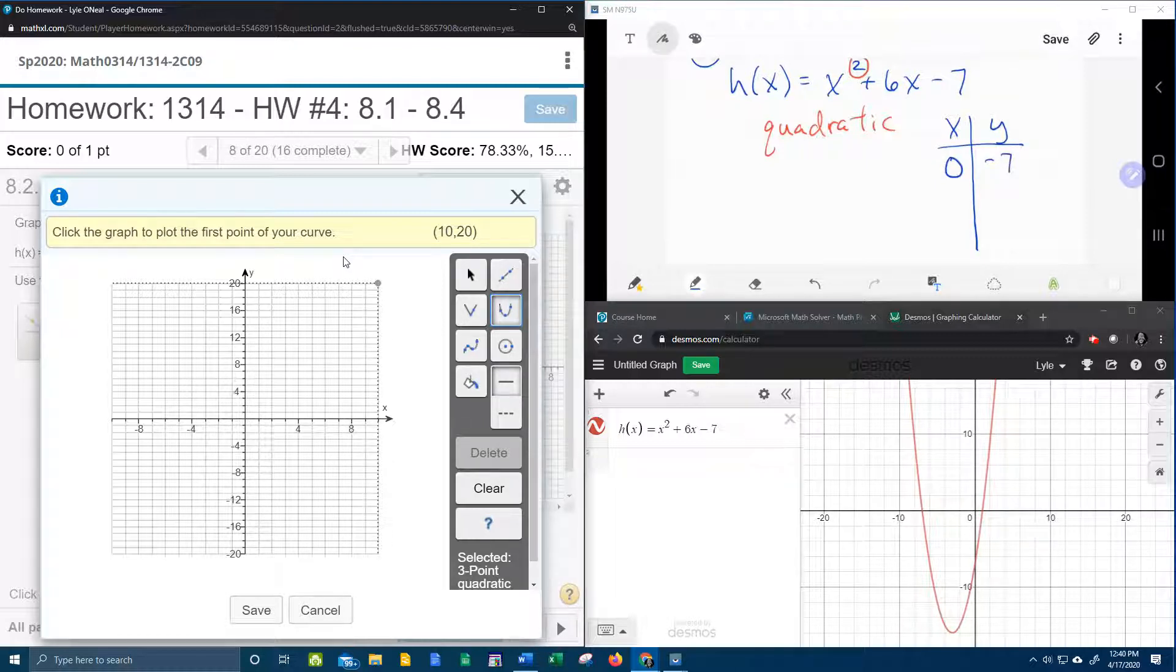And you can pick any x you want, so let's say 1 maybe, and then to find that value, I'm going to say 1 squared plus 6 times 1 minus 7.